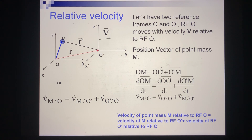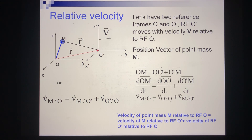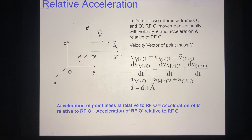We can write this relationship as an equation. If we take the derivative of this expression with respect to time, we get the velocity of the particle with respect to the static system equals the velocity of the moving system with respect to the static, plus the velocity of the particle with respect to the moving system. Taking the derivative of both sides again gives us the corresponding relationship for acceleration.